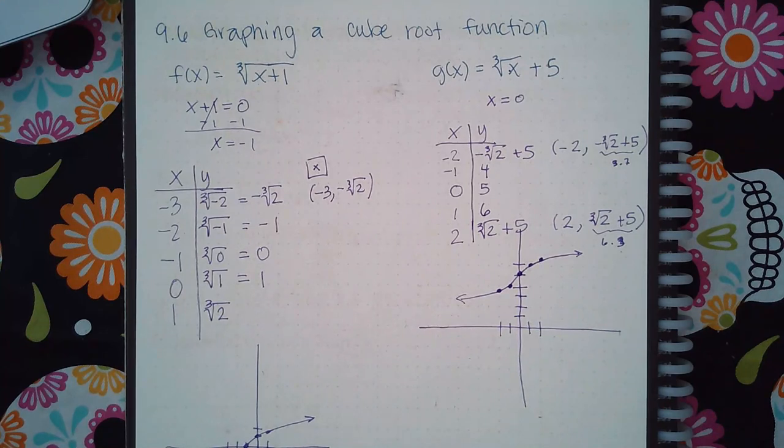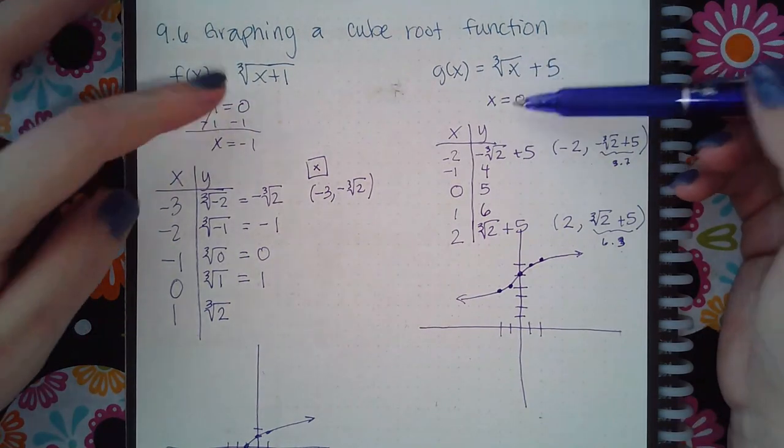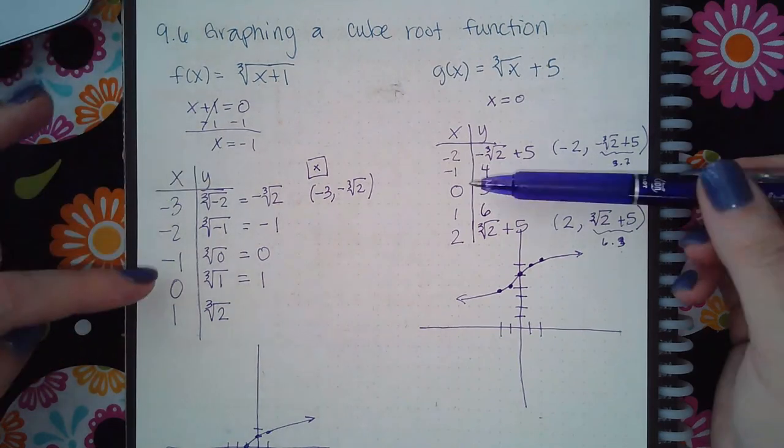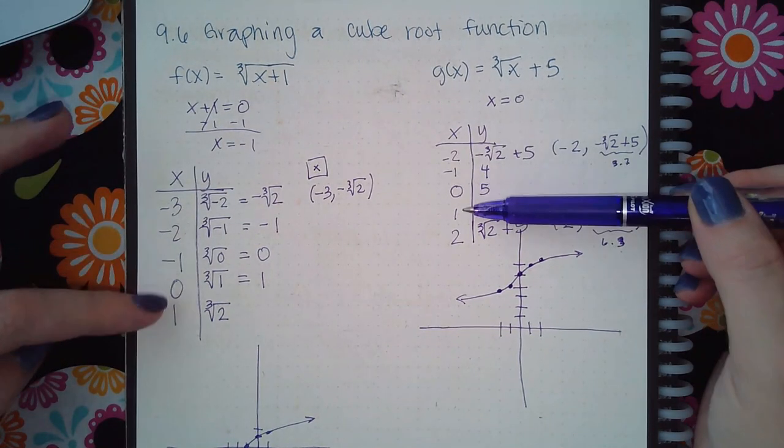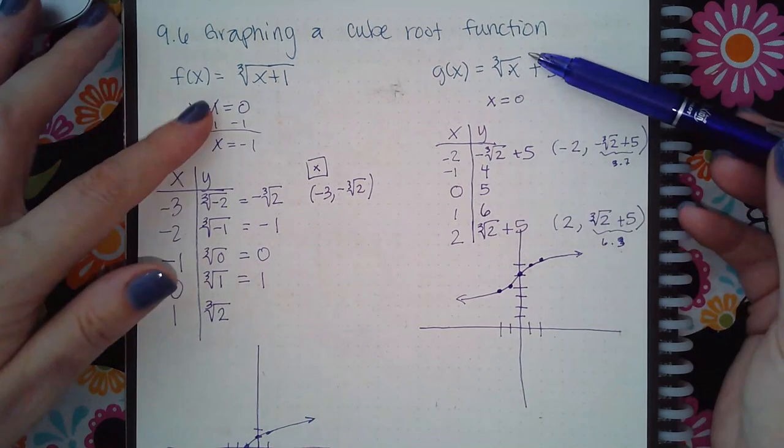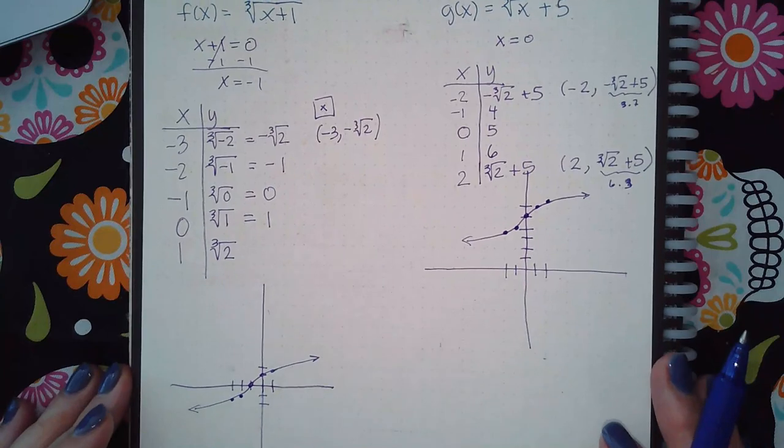That's how you will graph these functions. So always take what's inside the house, set it equal to 0 to find the center. Once you know the center, pick two values to the left of it, pick two values to the right of it, plug them into your function, and then you can plot your points and connect your dots for the graph.